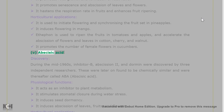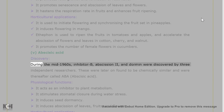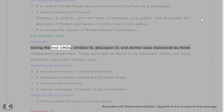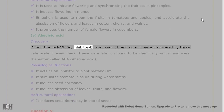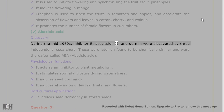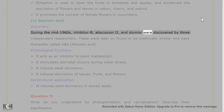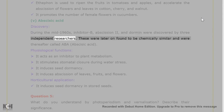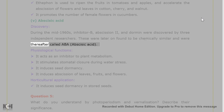5. Abscisic acid — Discovery: during the mid-1960s, Inhibitor B, abscission 2, and Dormin were discovered by three independent researchers. These were later found to be chemically similar and were thereafter called ABA, abscisic acid.